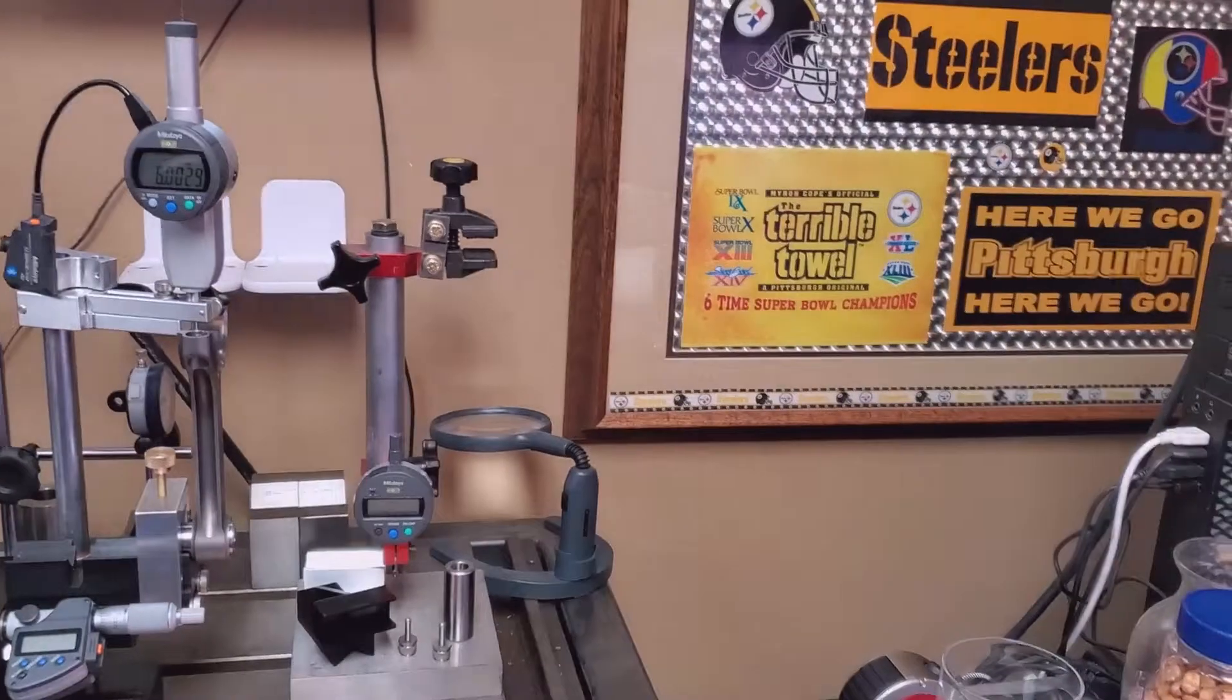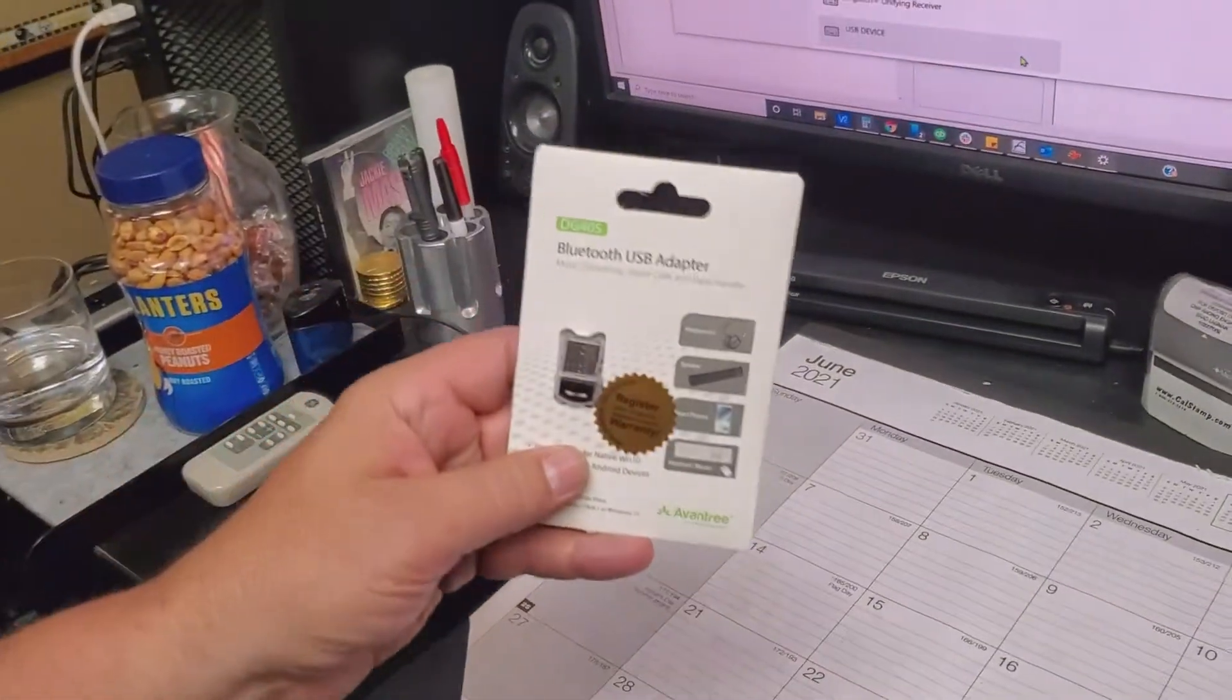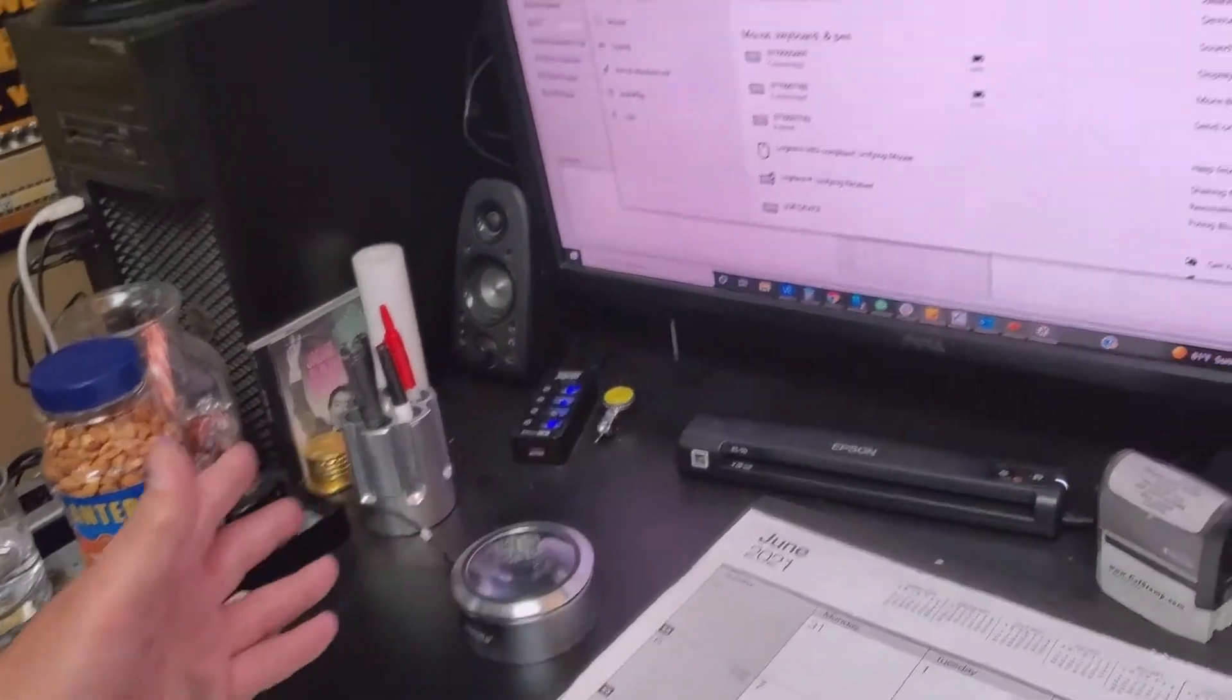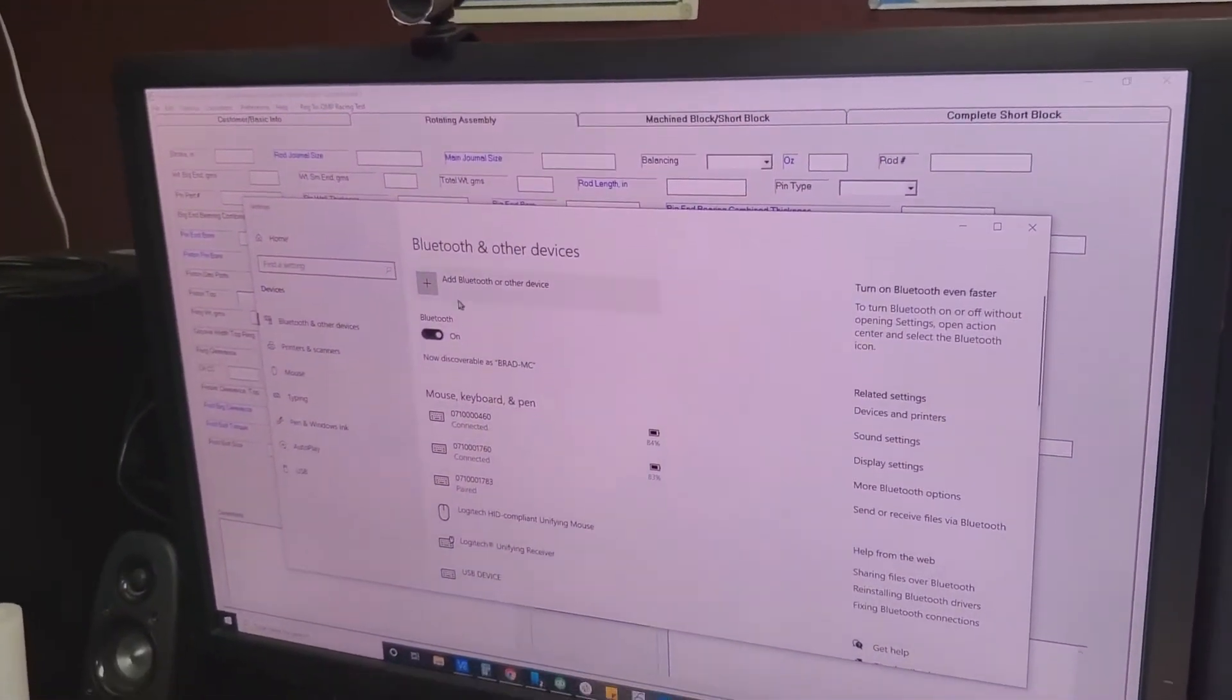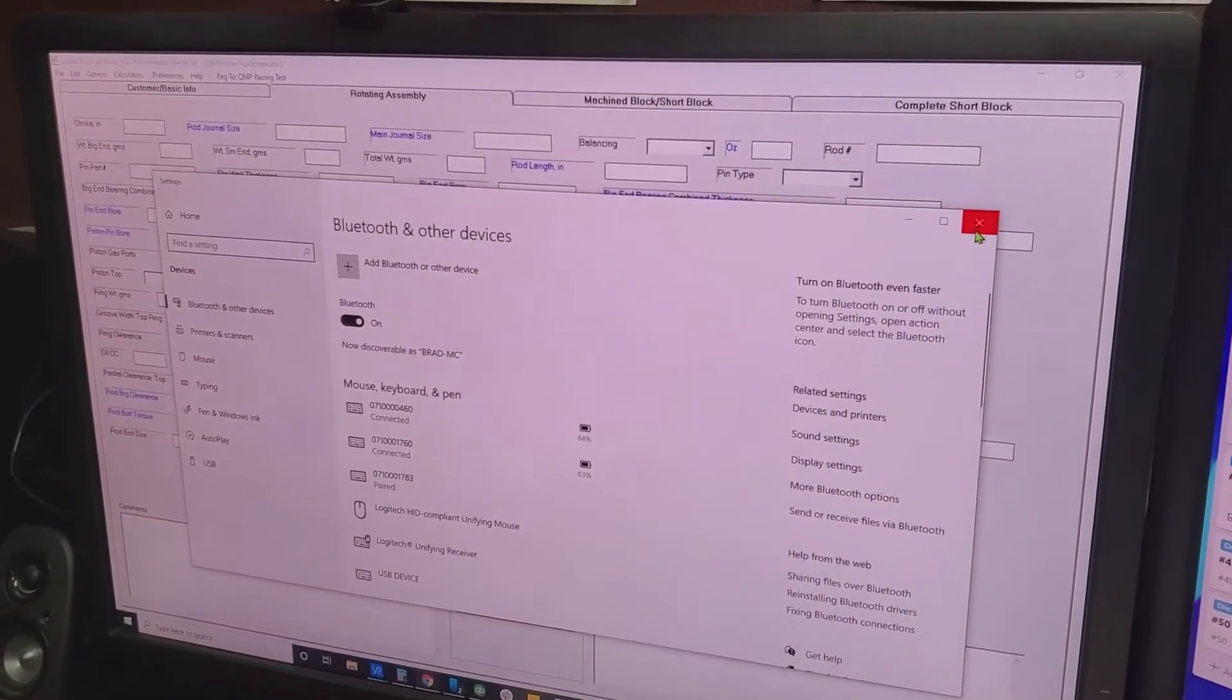So now with the U-Wave, you got a PC, doesn't have Bluetooth, USB adapter, 10 bucks. You make it discoverable, that's the two waves. I got one for the micrometer and one for that. Okay, we're good there.